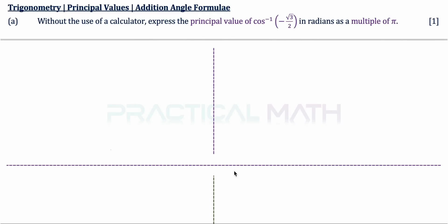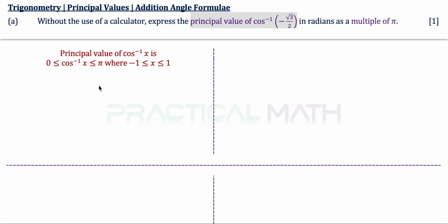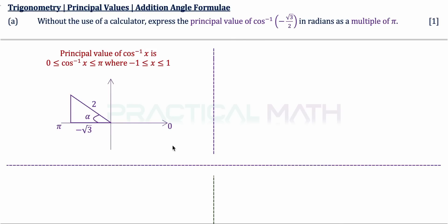In part A, we need to find the principal value of the cosine function. The principal value of cosine inverse of x lies in the range from 0 to π inclusive, referring to the first two quadrants: 0 to π/2 to π.